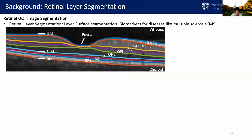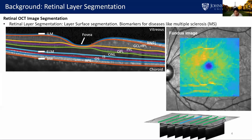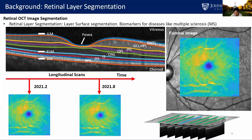Automated retinal layer segmentation from OCT images is an important task. In our current OCT device, we can see eight retinal layers clearly. The retinal layer surface segmentation can be used for thickness analysis and surface-based registration. The thickness of retinal layers are important biomarkers for neurological diseases like multiple sclerosis, MS. Researchers found that RNFL and GCL plus IPL thicknesses measured from OCT can assess global disease progression for people with MS. We segment each B-scan and obtain thickness maps over the fundus image, and can monitor disease progression through longitudinal scans.